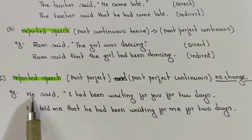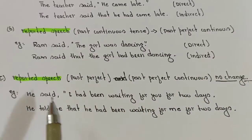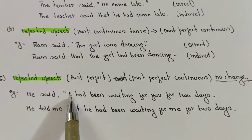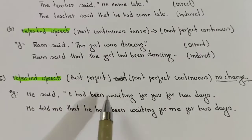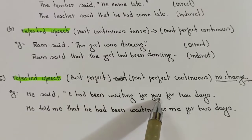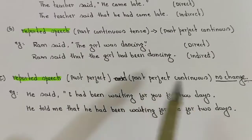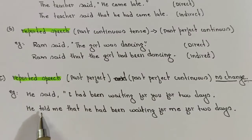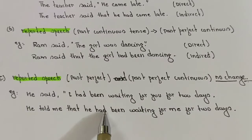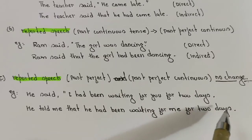Third condition: if the reported speech is in past perfect or past perfect continuous, then no change will take place. Example: 'He said, I had been waiting for you for two days' becomes 'He told me that he had been waiting for me for two days' — no change.